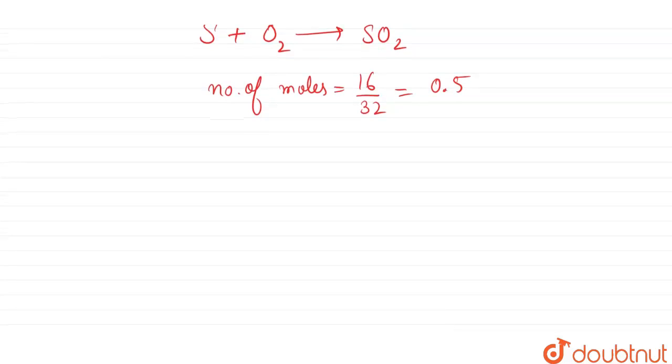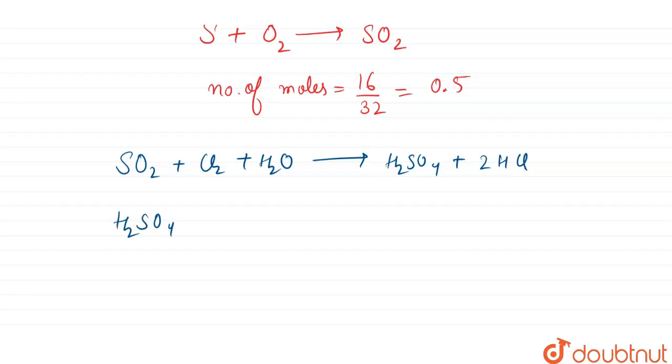According to the question, the reaction will be that SO2 is treated with chlorine water, so it forms sulfuric acid plus hydrochloric acid. This sulfuric acid when treated with barium chloride, it forms barium sulfate plus HCl.